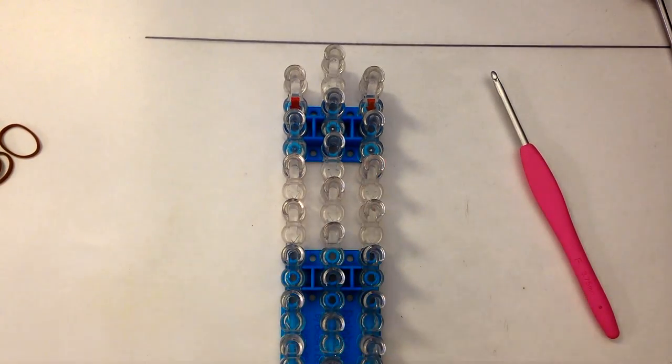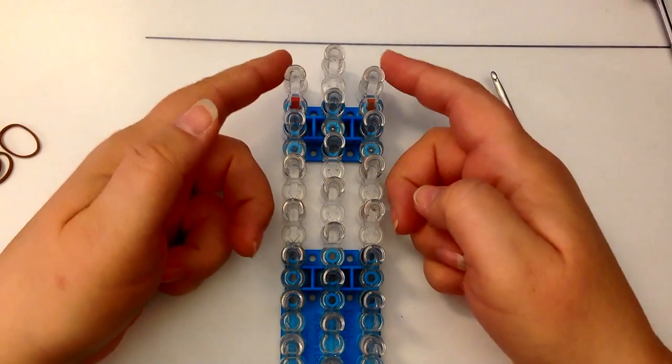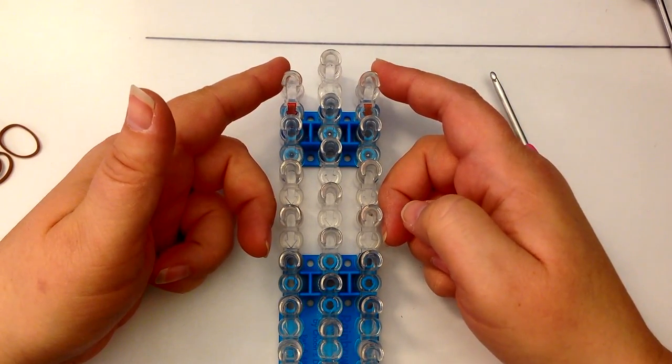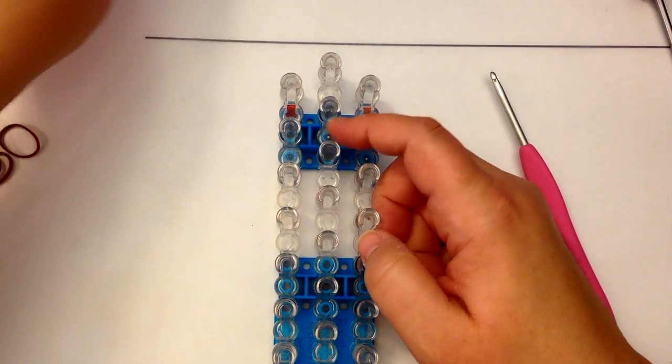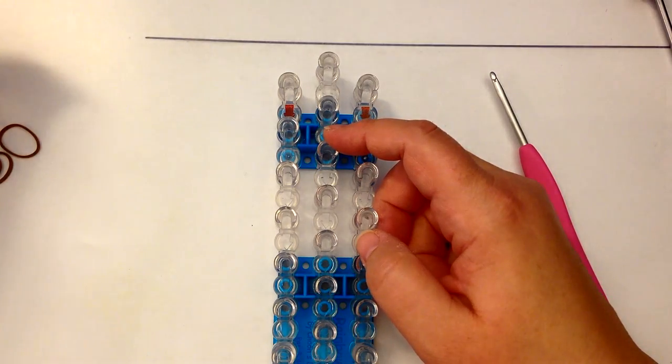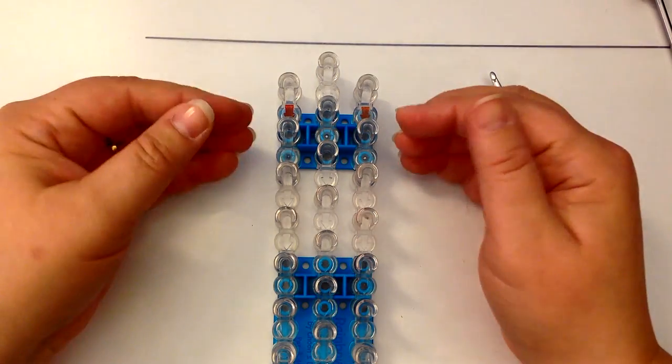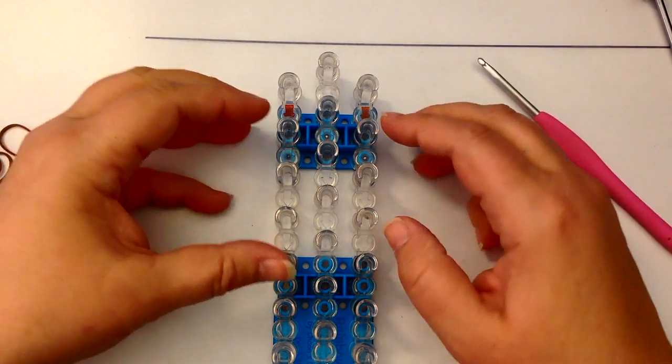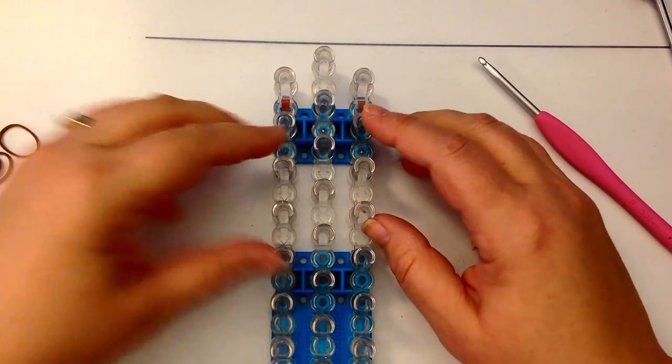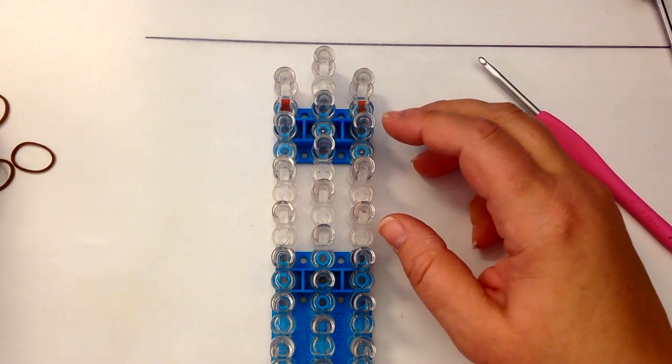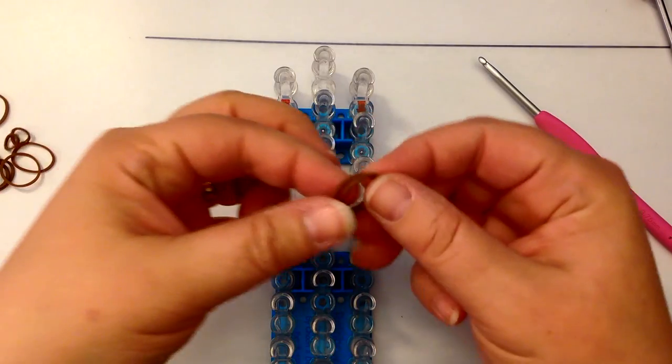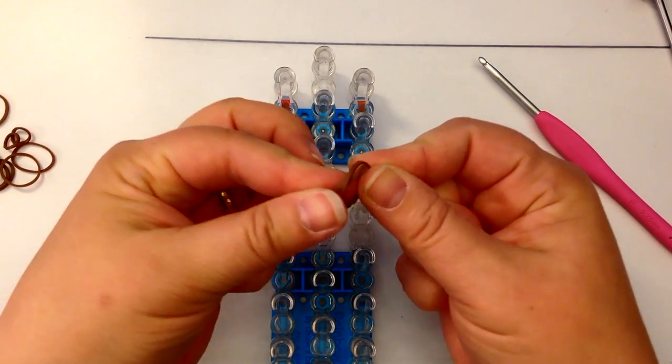We're going to start with a single loom in the offset configuration. Columns one and three are going to be slightly lower than column two. We're going to have the open part of the peg facing towards us or the arrow facing towards us. We're going to be double banding, which means you take two bands and you place them on the pegs together as if they were one.